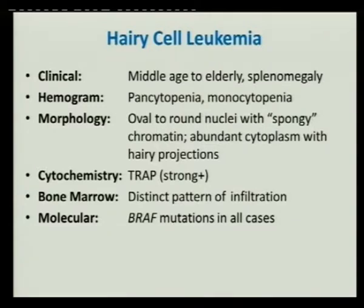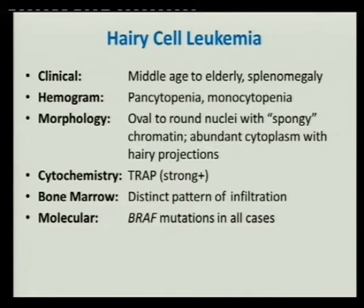Moving to hairy cell leukemia: using the same approach — clinical, hemogram, morphology. The morphology can be deceptive; you may not be able to find the fine hairy projections. Look at the chromatin pattern, called spongy chromatin. The pattern of bone marrow infiltration is very important for identifying hairy cell leukemia. Typically, these patients do not present with lymphadenopathy — that's against the diagnosis. Sometimes hairy cell leukemia has been associated with large B-cell lymphoma or can transform into it, so don't totally dismiss hairy cell leukemia just because lymph nodes are enlarged, if all other features and immunophenotype fit.